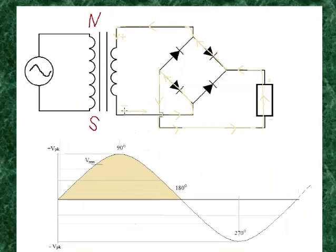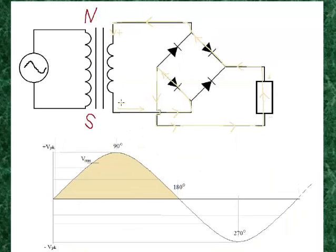We'll assume this is positive and this is negative for that alternation — this is the source of electrons and this is where they want to go. So the electrons flow through the conductor. They cannot go this way because it's a road block, so they go this way. They can't go straight over to the positive because this diode is a road block.